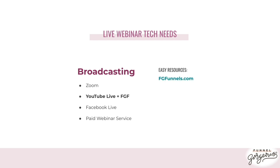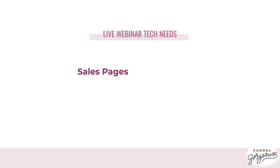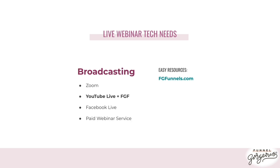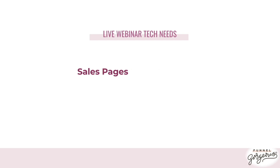The easy resource here is FGFunnels.com — the webinar templates and broadcast rooms are already set up for you; you just put in your YouTube link. Next is the sales page. After viewers finish watching the webinar and want to buy, they click a button or link to purchase. On FG Funnels there's an actual button; on Zoom, Facebook Live, or paid webinar services you'll have to provide a link.